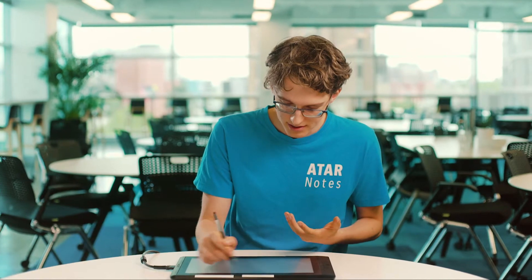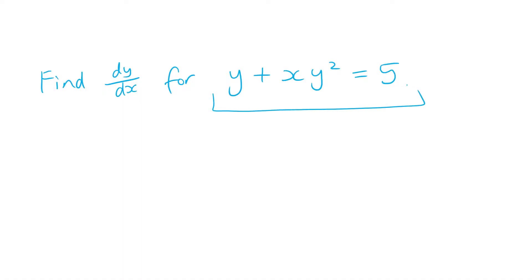So say this equation here, where we've got a jumble of x's and y's, so we can't use standard differentiation. We're going to use implicit differentiation here. It's exactly the same rules.